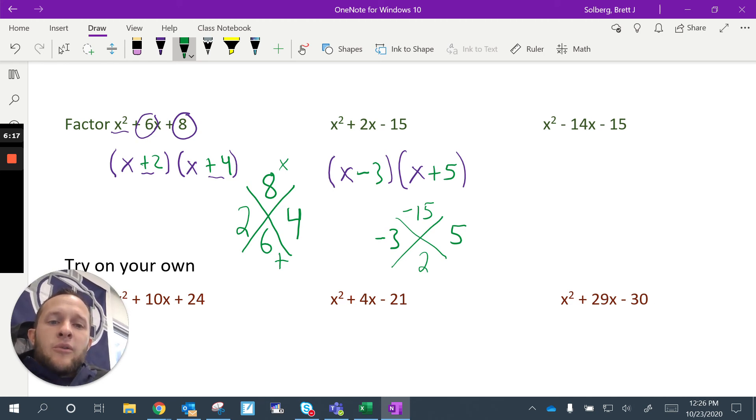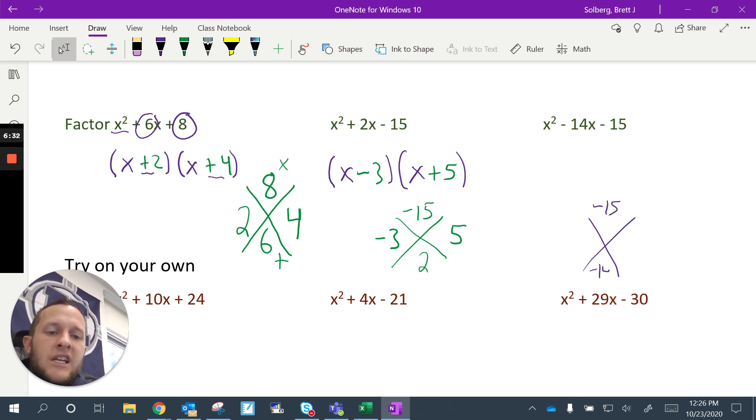All right, last one that we're going to do together. Then I'm going to have you try to do some on your own. So x² minus 14x minus 15. We are going to say, what numbers multiply to negative 15 and add to negative 14? Well, this time, instead of using 3 and 5 as our factors, we're going to have to use 1 and 15. But which one will be positive? Which one will be negative? And since they add to a negative, the bigger number is negative. So this is just x plus 1 and x minus 15.